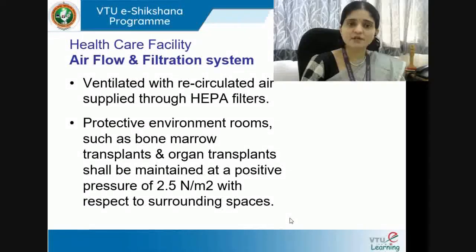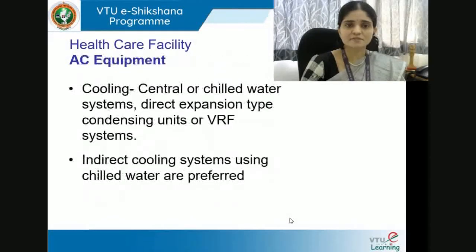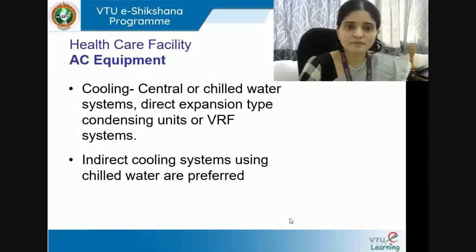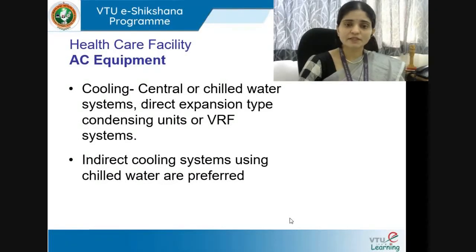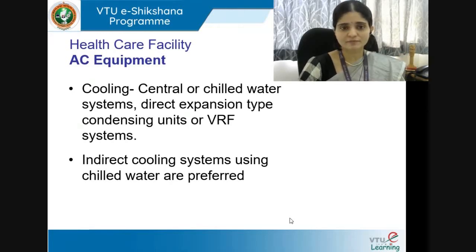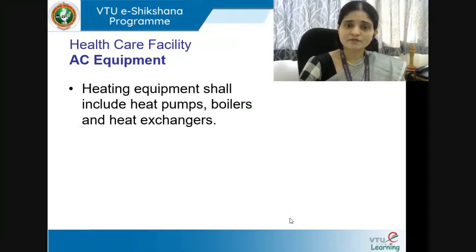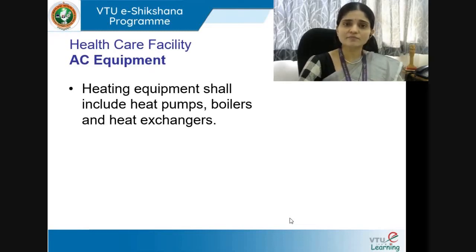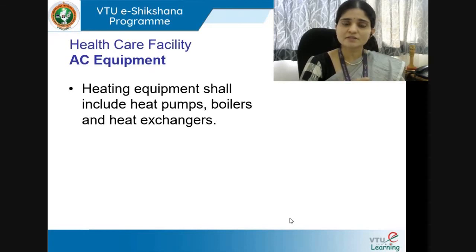These facilities should be ventilated with recirculated air supplied through HEPA filters only, which provide 99.98% efficiency. Protective environment rooms such as bone marrow transplant and organ transplant rooms shall be maintained at a positive pressure of 2.5 Pa with respect to surrounding spaces. For AC equipment, cooling shall preferably use central or chilled water systems. Direct expansion type condensing units or VRF systems can also be adopted — these were covered in detail in module 2 section 3. Heating equipment shall ideally be heat pumps, boilers, or heat exchangers. Selecting the right equipment with the right capacity to serve requirements is important.